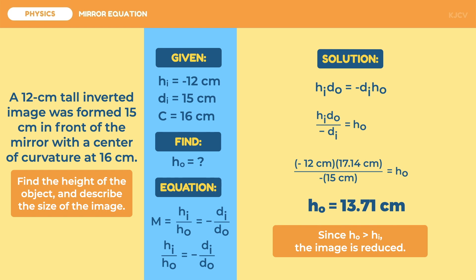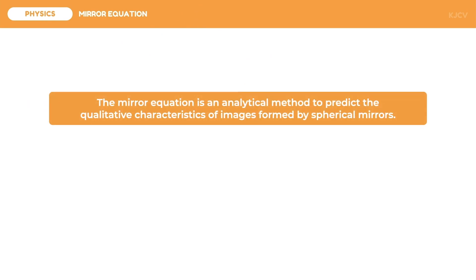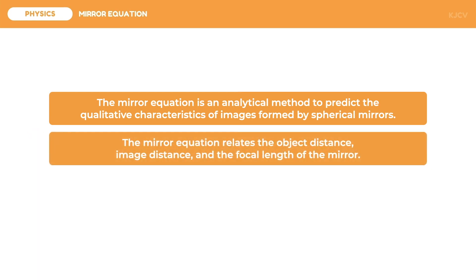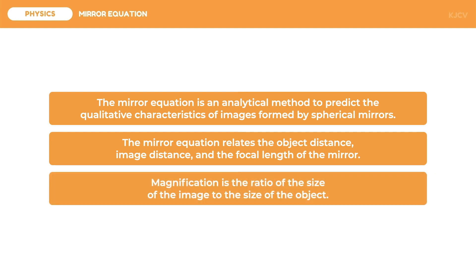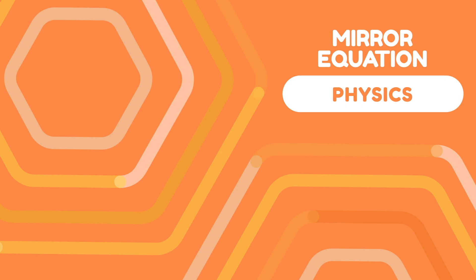To conclude this lesson, let us review the key points. The mirror equation is an analytical method to predict the qualitative characteristics of images formed by spherical mirrors. It relates the object distance, image distance, and the focal length of the mirror. Magnification is the ratio of the size of the image to the size of the object. And that ends our discussion on the mirror equation.